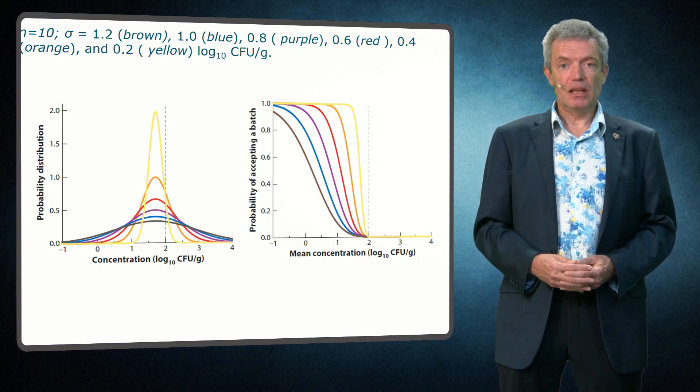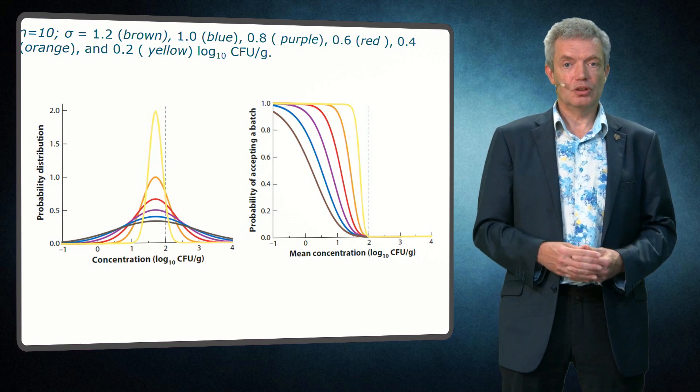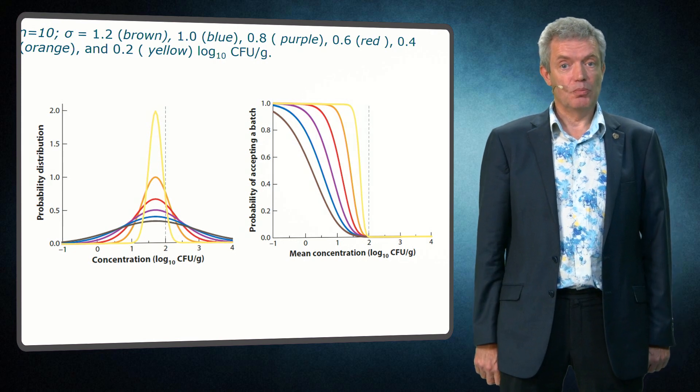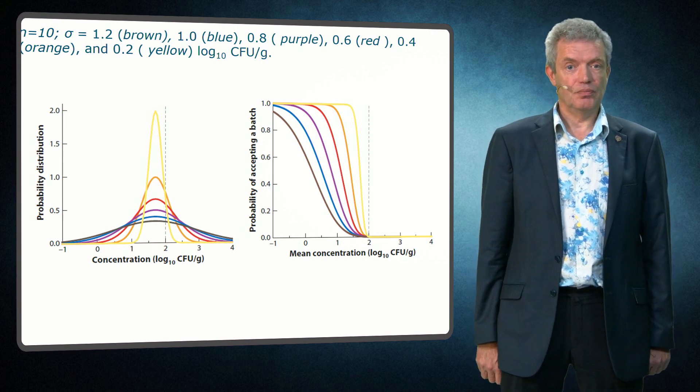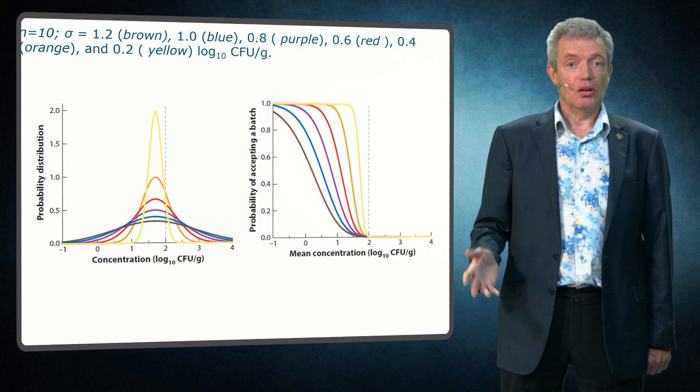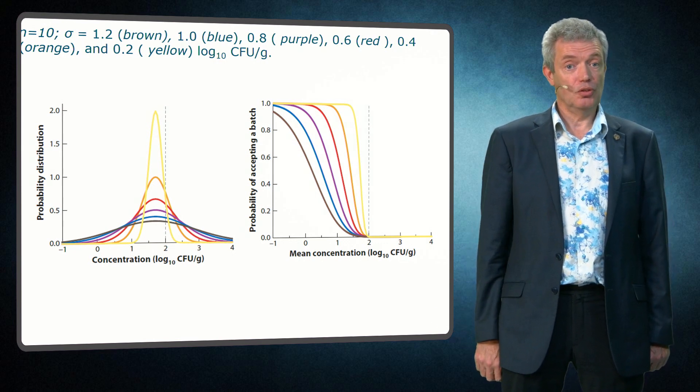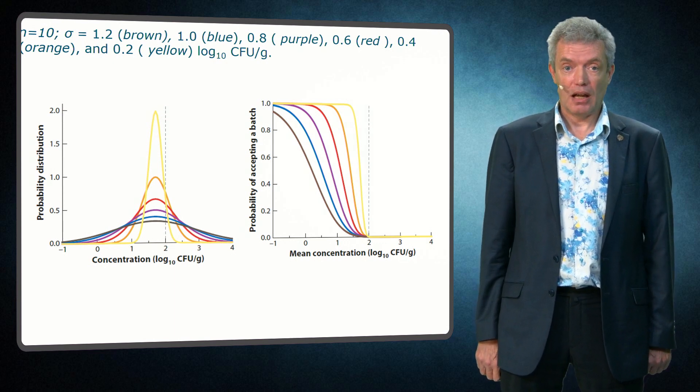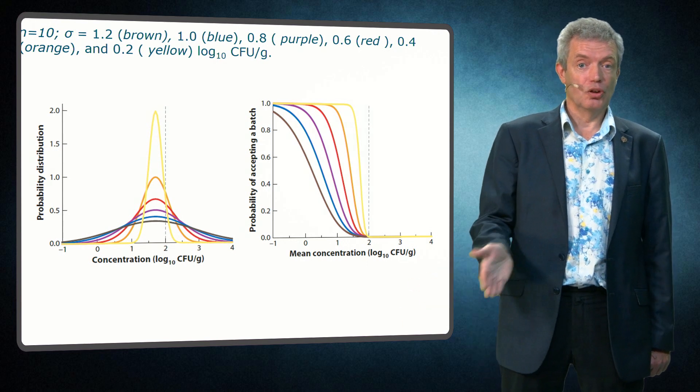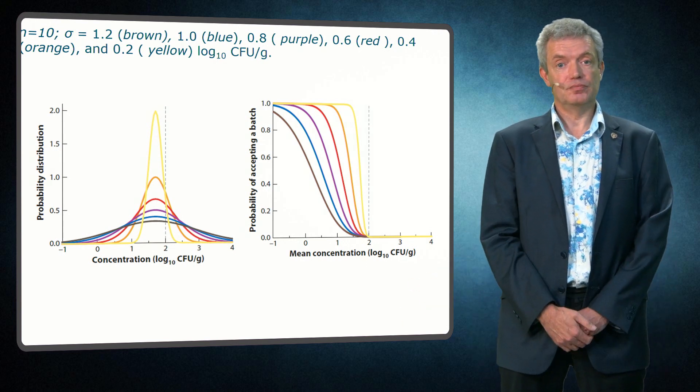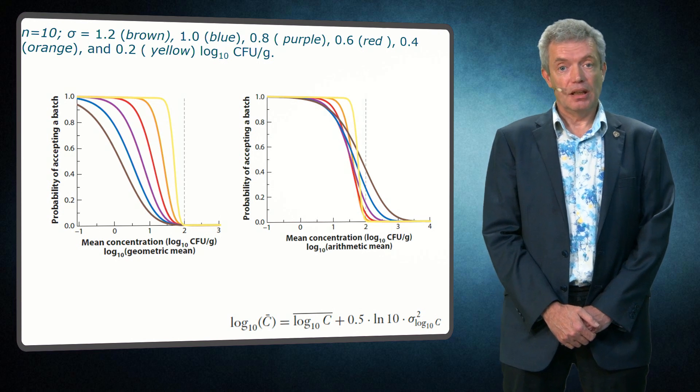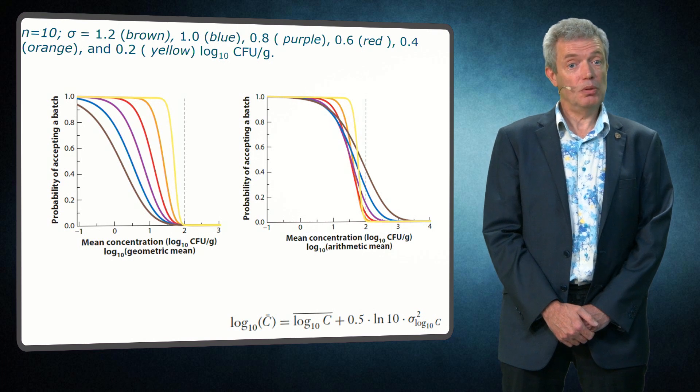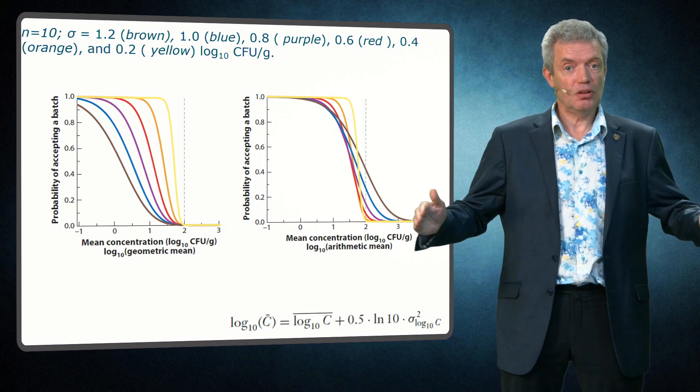All these calculations are based on the log mean concentration, also called the log geometric mean concentration. But we can also determine what this looks like if we plot it as function of the log arithmetic mean concentration. The geometric mean of all the curves on the left is equal, but the overall number of organisms in the brown curve is much higher and that is better represented in the arithmetic mean. And that is much higher in the brown curve than in the red or in the yellow curve. Then if we take the mean and then take the logarithm, you get another type of OC curve and the performance for the various distributions becomes much closer, showing less effect of the spread of the distribution.